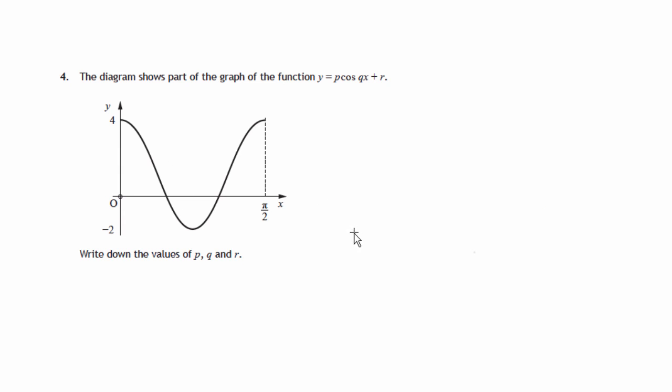So here's the graph that's given to us. Now remember the letter at the front, P, tells us the amplitude. If we look at the graph we've got, maximum is 4, minimum is negative 2. So the whole range of values goes from negative 2 up to 4. And that's a range of values of 6. Half of that is 3.